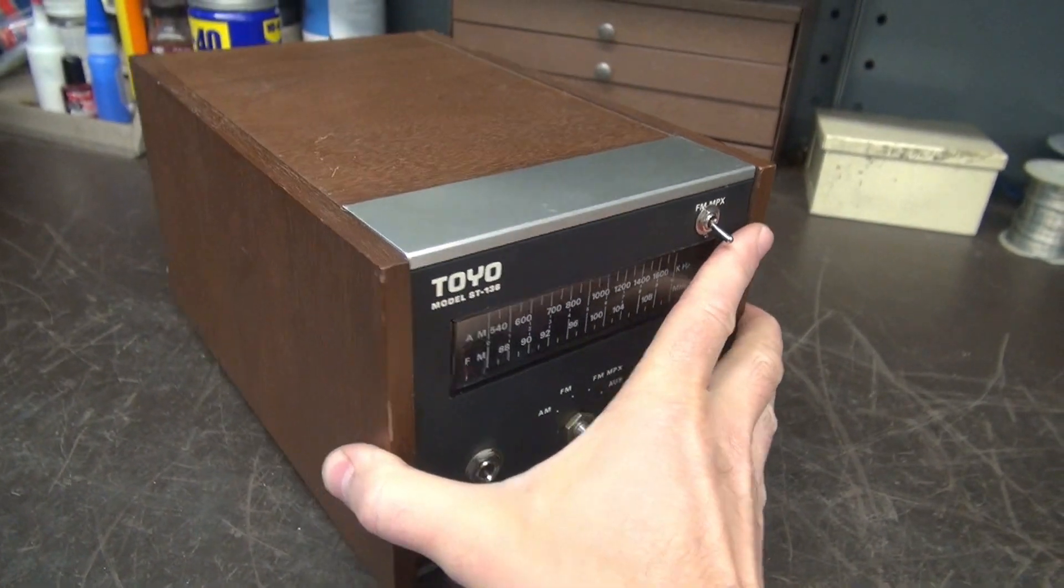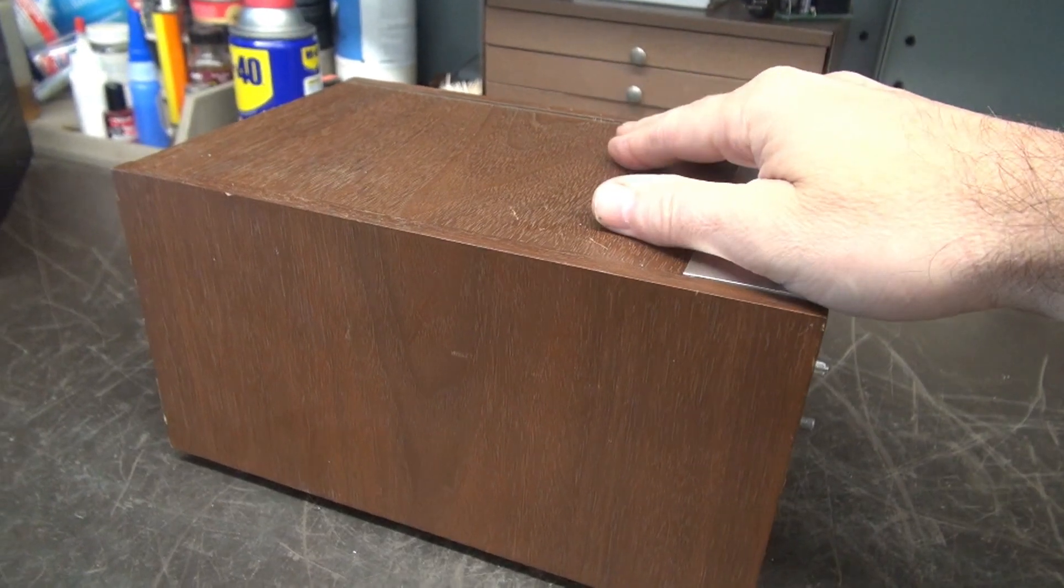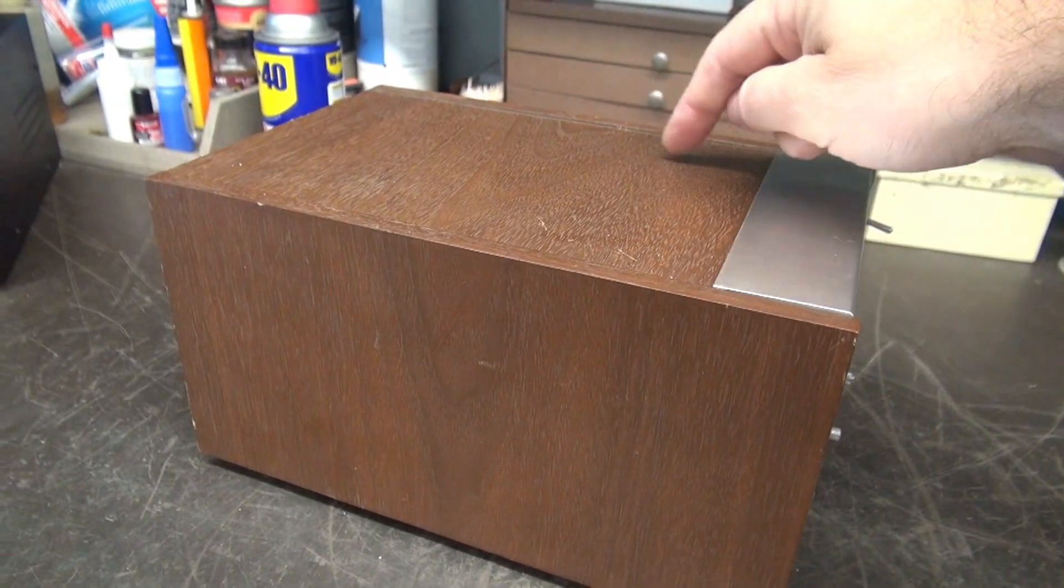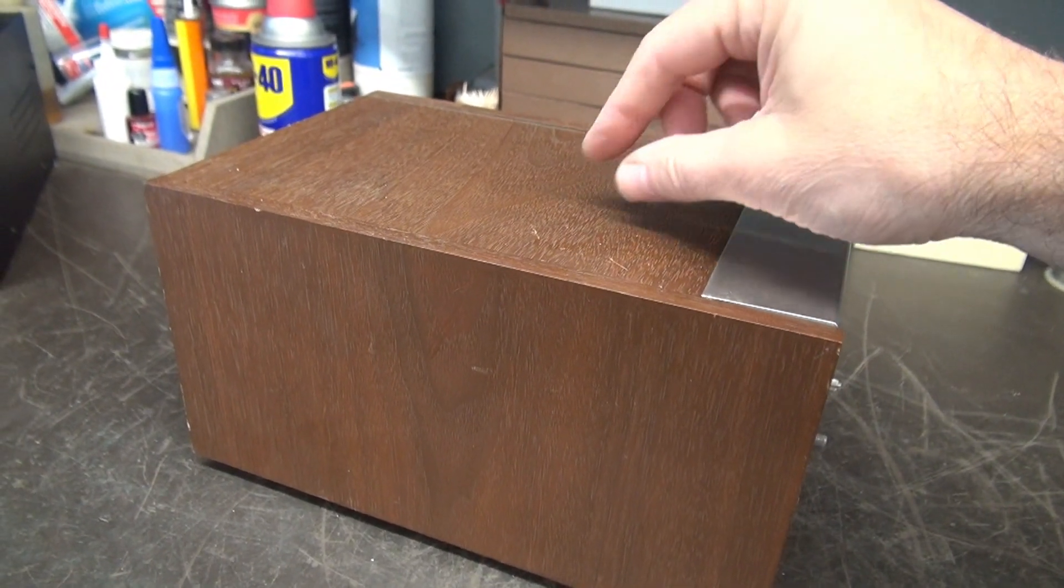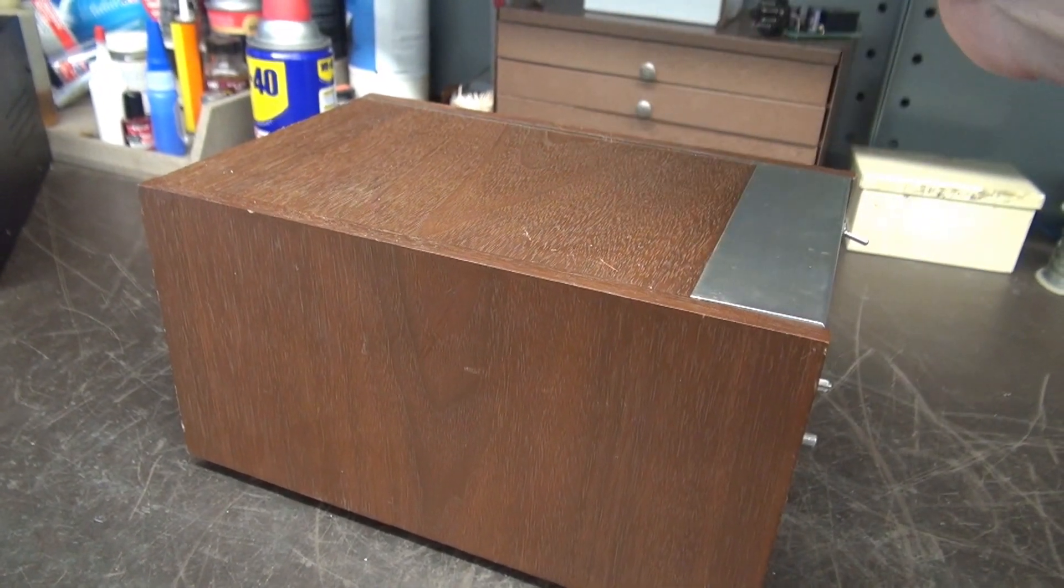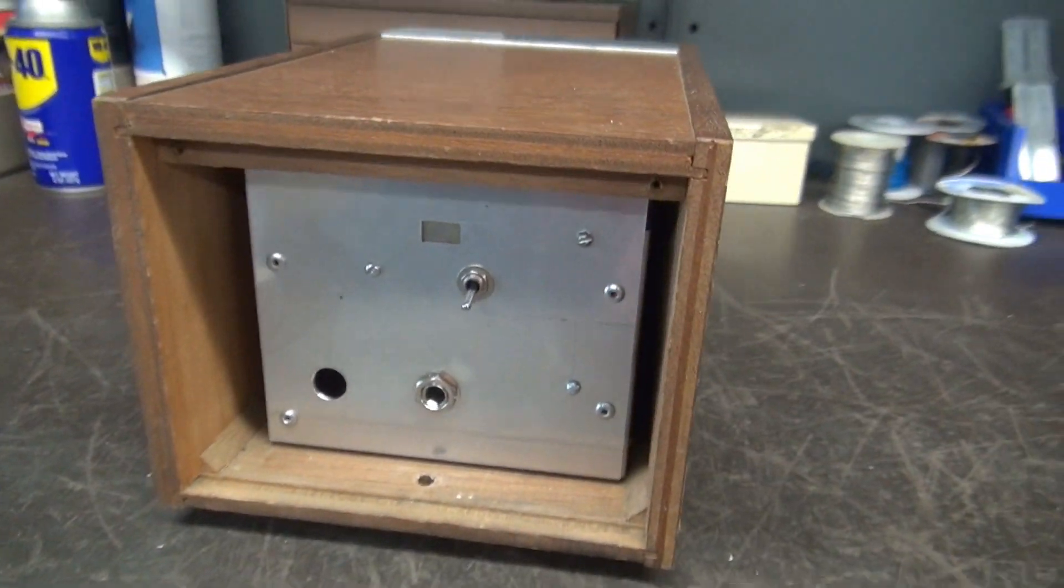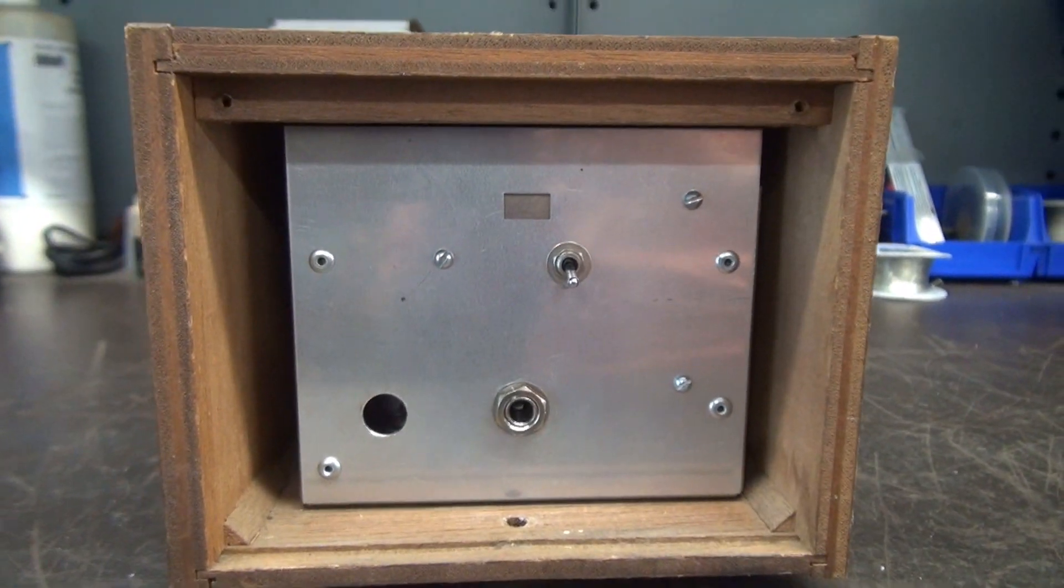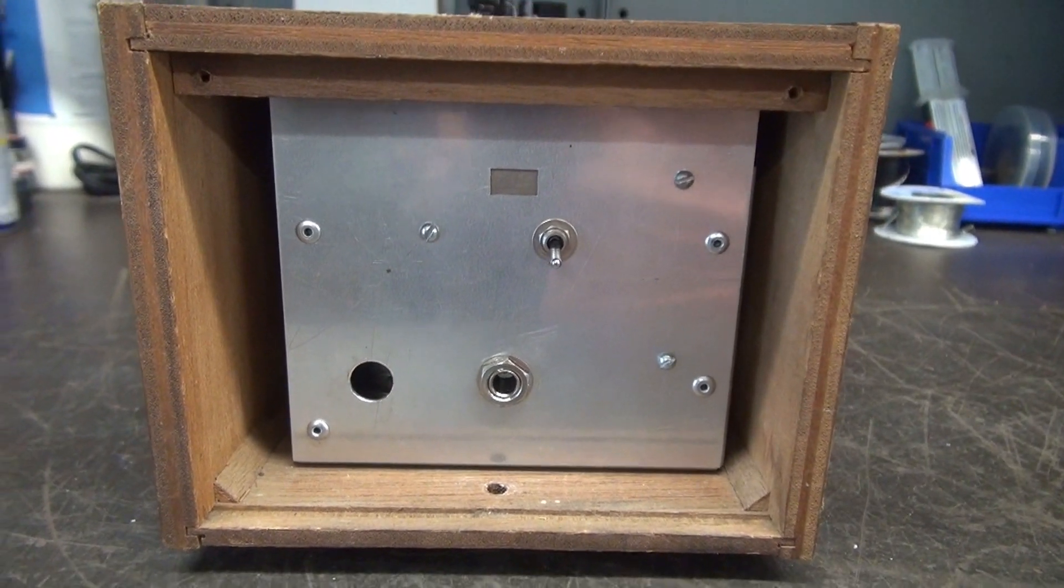The only issue that I see is access to the tubes because right now it's a solid wood top. So I may have to open this up and put some ventilated type of metal in there, maybe hinged, so you could reach in and pull the tubes. But there is plenty of ventilation because it's not a tight fit. So I really don't think heat's going to be an issue, but we'll deal with that later.